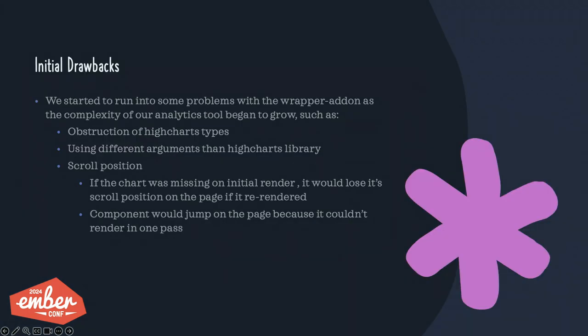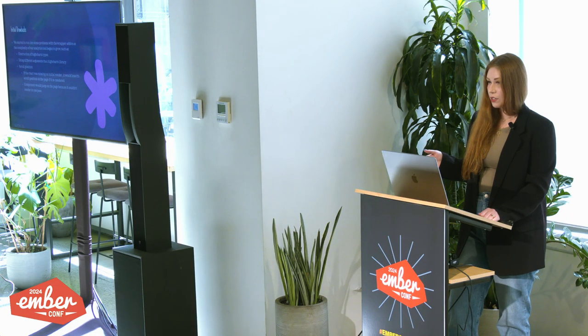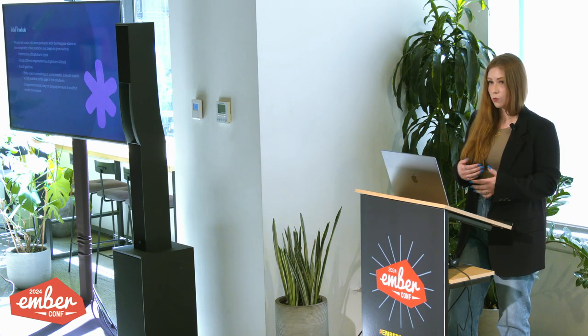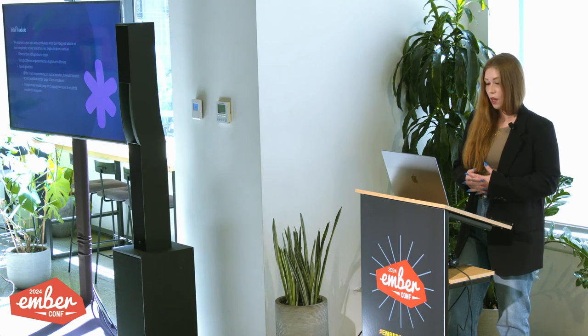As our feature started to increase in complexity, we found some drawbacks to the wrapper add-on. First, it was obstructing HiCharts' built-in types, which was a bummer because those types are really nice and robust. Additionally, the wrapper used different argument names, forcing us to learn not only HiCharts itself but also how the add-on was abstracting it. Finally, we had issues with scroll position and initial rendering — in some cases the chart would be missing on initial render, and when the graph re-rendered we'd lose scroll position, pushing the graph out of sight so the user would miss the re-render entirely.